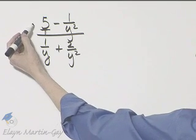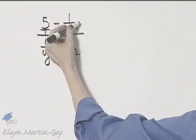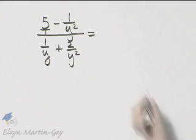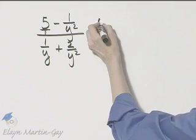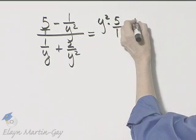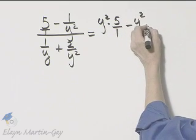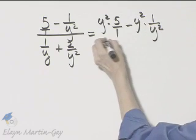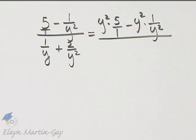Now, if I multiply the numerator by y squared, that means every single term in the numerator and the same thing in the denominator. So, y squared times 5 over 1 minus y squared times 1 over y squared. I am multiplying every single term in numerator and denominator by y squared.